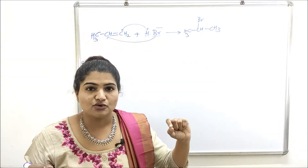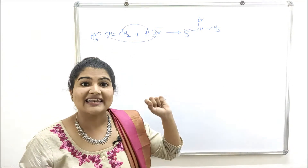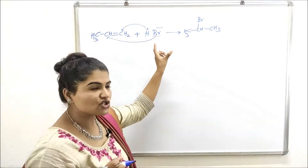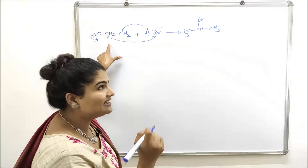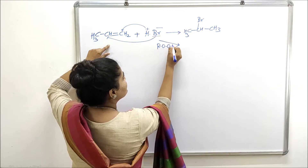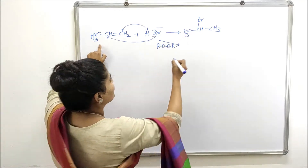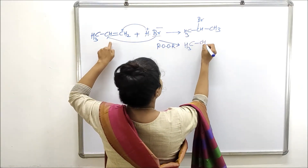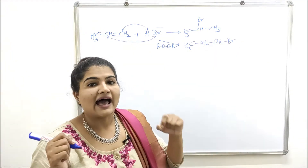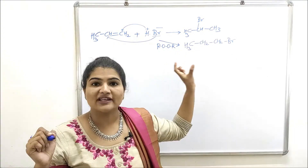In today's video we are going to extend this discussion to the case when such reactions are carried out in the presence of organic peroxides. If I carry out the same reaction — addition of HBr to an alkene — in the presence of organic peroxides, then instead of isopropyl bromide I will get CH₃CH₂CH₂Br, which is n-propyl bromide, as the major product. This must be due to the presence of organic peroxides.